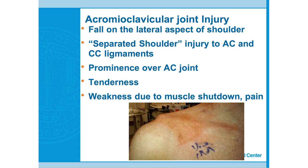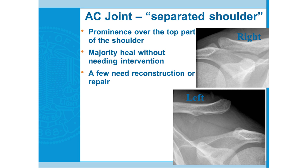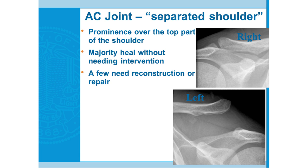Significant AC joint injuries may show a prominence over the AC joint, as in this patient. There are different grades of AC sprains — the lowest grade causes pain without visible deformity. X-rays are very helpful and can differentiate this from a clavicle fracture at the distal end, which can present similarly. Patient has tenderness, weakness from muscle shutdown and pain, and sometimes a visible prominence. By and large, most AC separations heal without surgery — rest with a sling and physical therapy. However, higher-grade type AC separations may benefit from surgical reconstruction, so if the collarbone is sitting up in the breeze, consider referring to a surgeon.